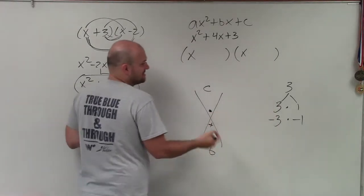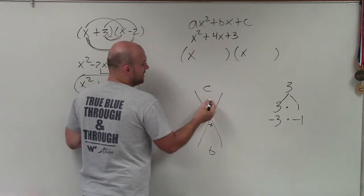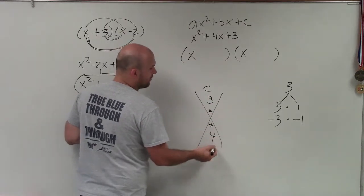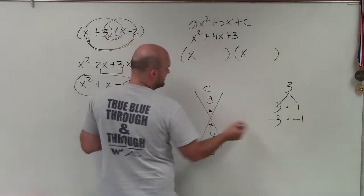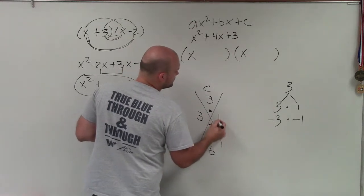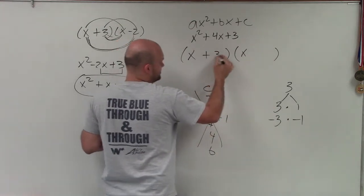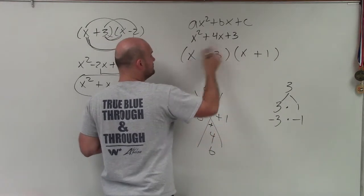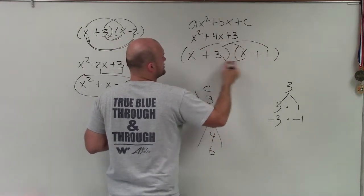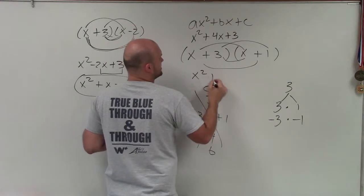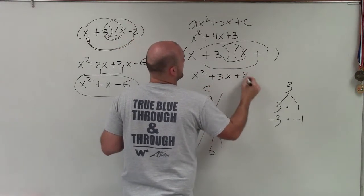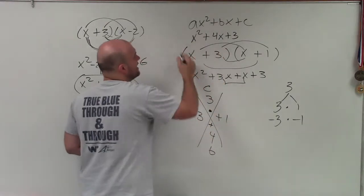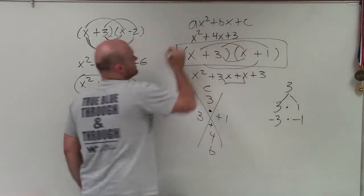3 is nice because the same factors multiply to give me 3 and add to give me 4. To give positive 4, it can't be the negatives, so it's 3 and positive 1. So the answer is x plus 3 times x plus 1. We can always test using the distributive property: x squared plus 3x plus x plus 3 — combine, and you can see that is the correct answer.